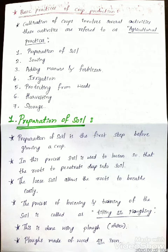Basic practices of crop production: cultivation of crops involves several activities, referred to as agricultural activities or agricultural practices. There are many agricultural activities done in crop production. The first one is preparation of soil.